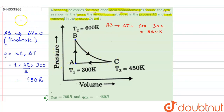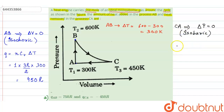For the process CA, there is a change in volume — from C to A the volume is decreasing — but pressure is constant. So delta P equals zero, making it an isobaric process. For an isobaric process, the heat exchange equals nCp delta T, where n is number of moles, Cp is heat capacity at constant pressure, and delta T is change in temperature. Here n equals one.